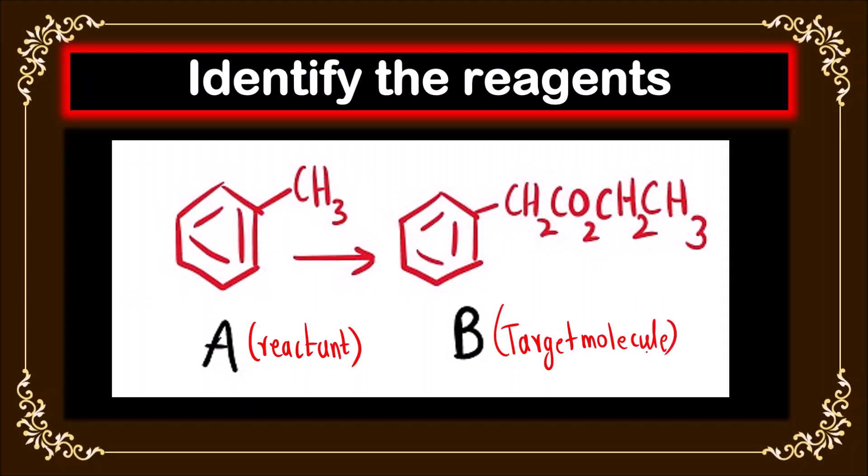What we have to do is first try to understand the structure of the product that is given to us that we have to synthesize. There is this benzene ring, CH2. What is the meaning of CO2? That is very important. It is a condensed formula for ester. CO2 is a condensed formula for ester group. CH2, CH3.